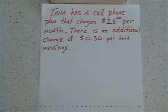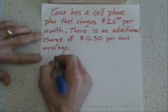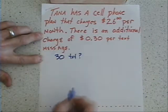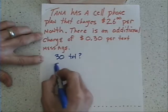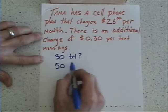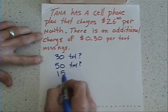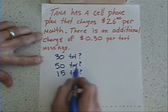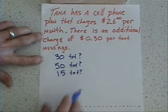I want to find out what some different values would be depending on the number of text messages. What would happen if she sent 30 text messages — what would be her total cost for the month? Or maybe how would we do it if there were 50 text messages? Or what if she didn't text that often and only texted 15 times? The question becomes how do we calculate this each time.